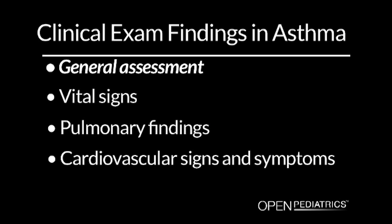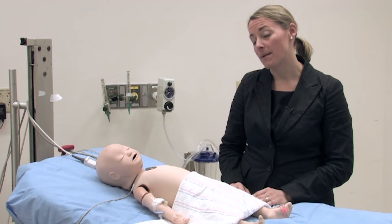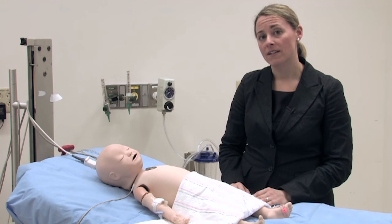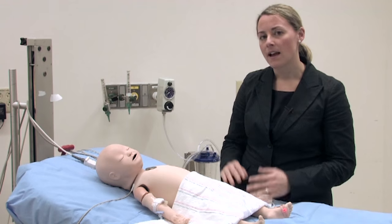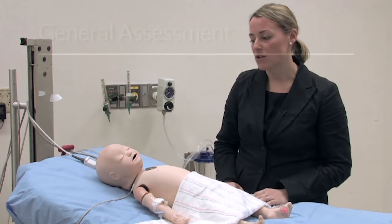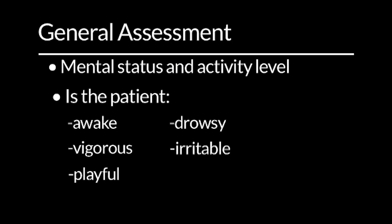General assessment. The first thing I do to examine a patient with an asthma exacerbation or status asthmaticus is to look at the general picture of the patient. I want to assess the mental status and activity level. Is the patient awake? Is the patient vigorous and playful? Or is the patient drowsy, irritable, or even unconscious?